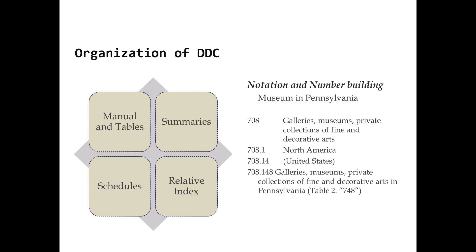Another thing to note is that DDC may also have some geographic bias. If you look at the tables for geographical names, you will see it is broader U.S.-based in the sense that some geographical places actually get down to the county level within the United States. For other countries, there's no way you will find a number for a certain county or province like that.